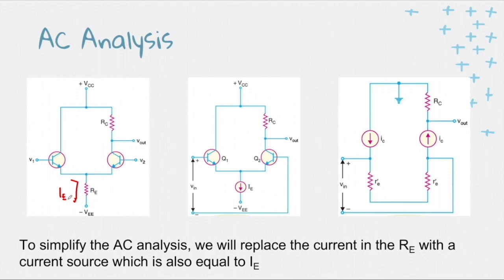So we will convert or we will replace the IE-RE combination on the emitter with a single current source IE that will simplify the AC Analysis of this BJT Differential Amplifier.